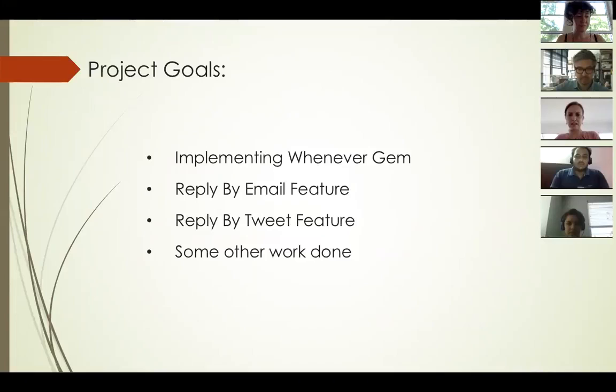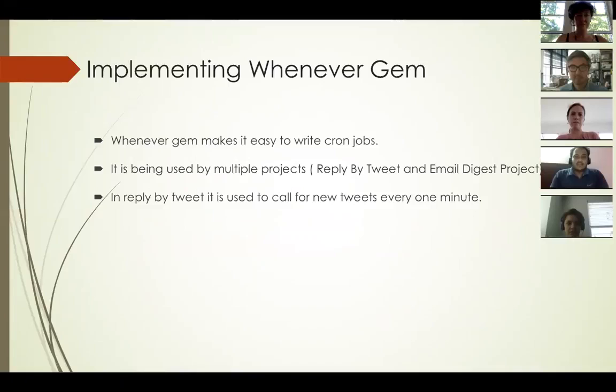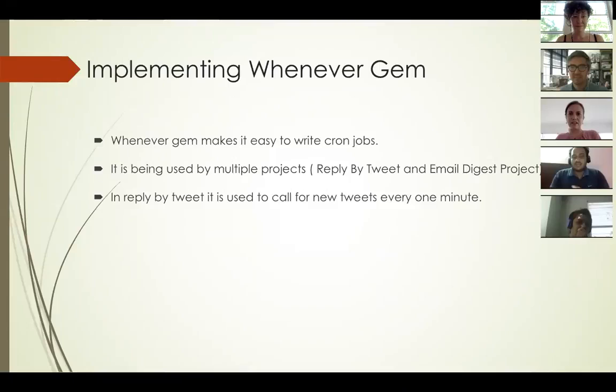The first thing I did was implement the Whenever gem. What is the Whenever gem? It is a gem that makes it easy to write cron jobs. Without it, it is difficult to write cron jobs. Using this gem, we can write cron jobs very easily in Ruby — it's very simple, almost like writing English. It is being used by multiple projects: reply by tweet and email digesting. In the reply by tweet feature, it is used to poll for new tweets every one minute.